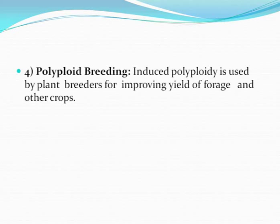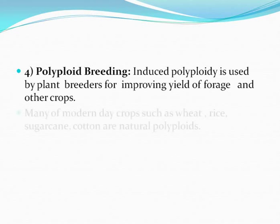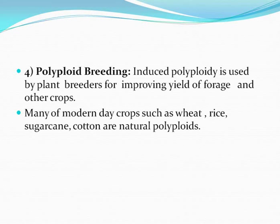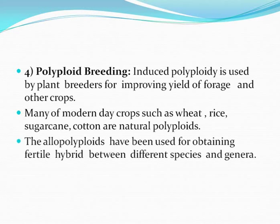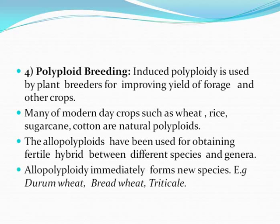Polyploid breeding: induced polyploidy is used by plant breeders for improving yield of forage and other crops. Many modern-day crops such as wheat, rice, sugarcane, and cotton are natural polyploids. Allopolyploids have been used for obtaining fertile hybrids between different species and genera. Allopolyploidy can immediately form new species — examples are durum wheat, bread wheat, and triticale.